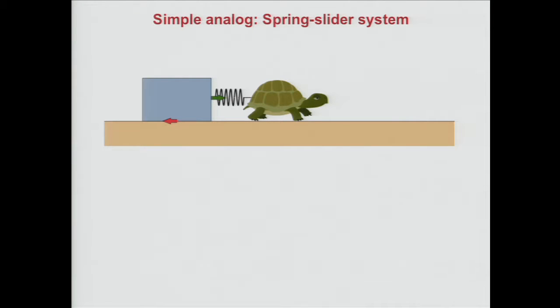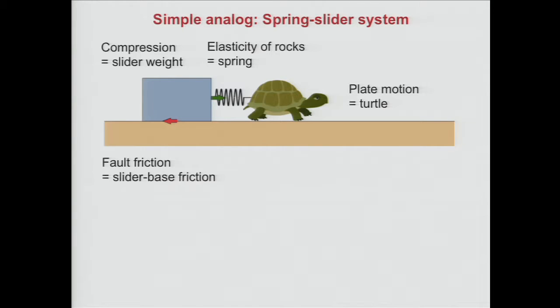To understand why some segments are locked and some are creeping, we go to a very simple analog system called the spring-slider system — a Feynman version of an earthquake system. You replace the plate motion with a turtle dragging a block, replace the elasticity of the rock with a spring, and the fault friction is represented by friction between the slider and the base. The compression for the friction is provided by the slider's weight.